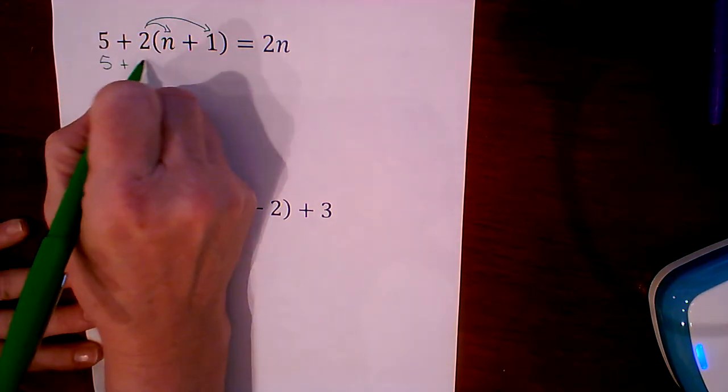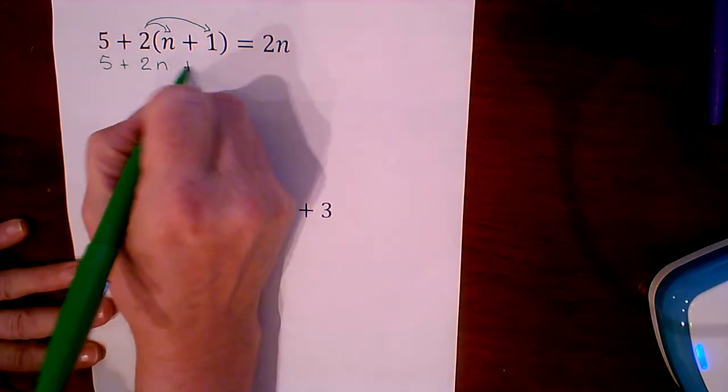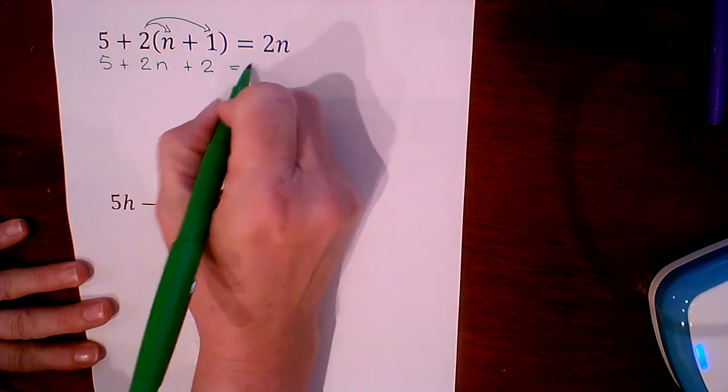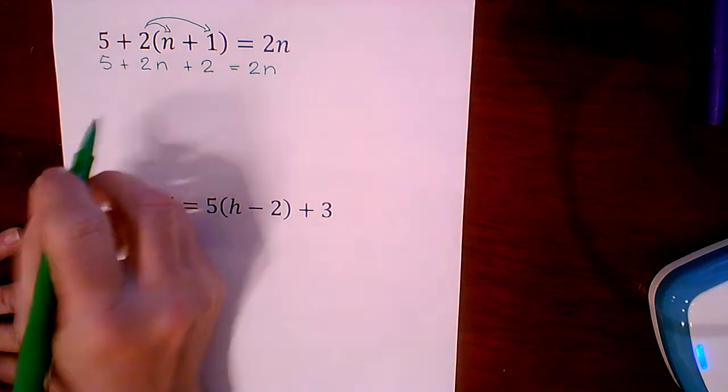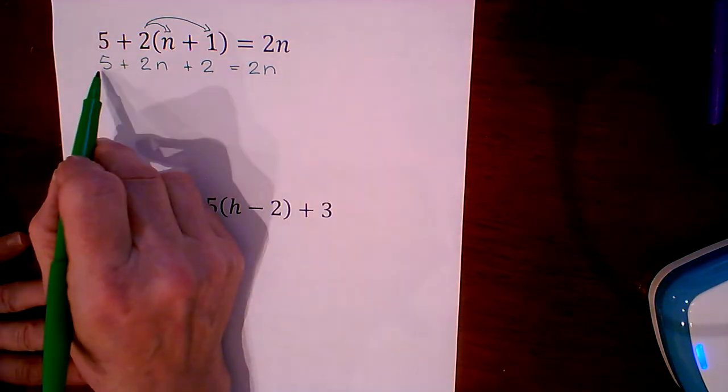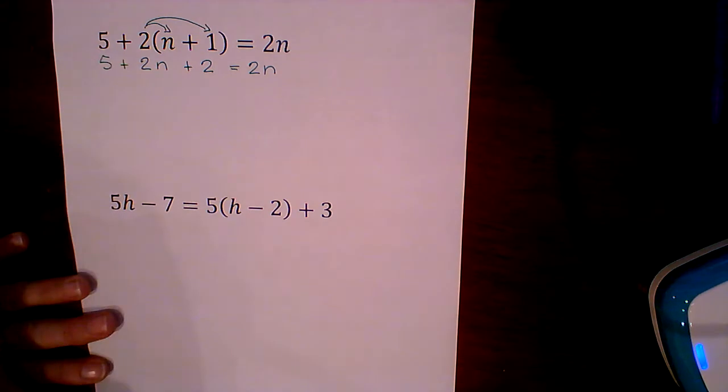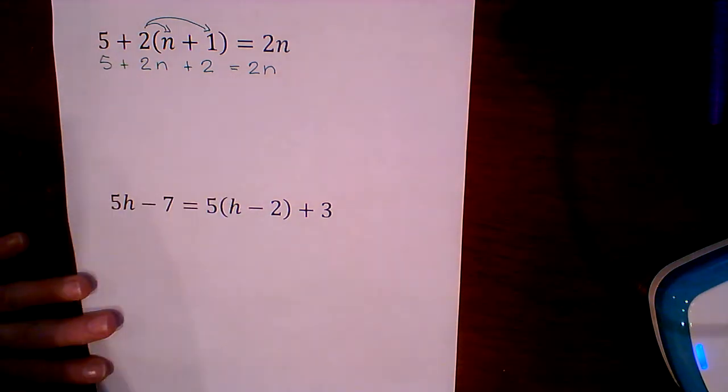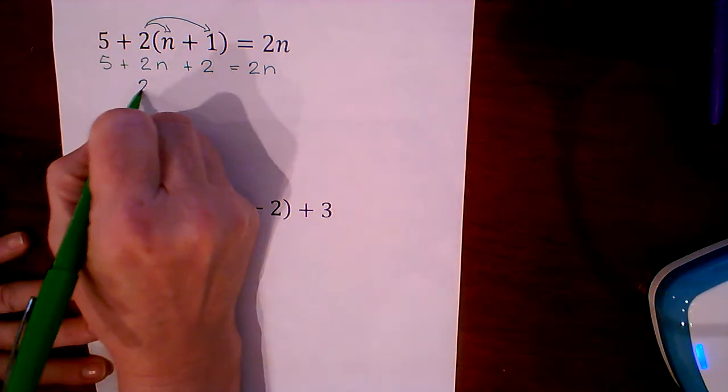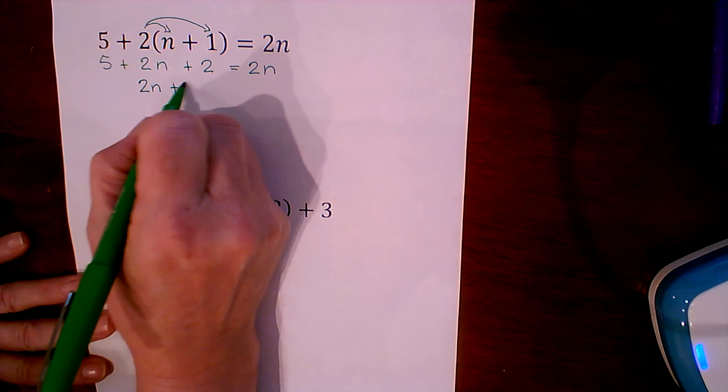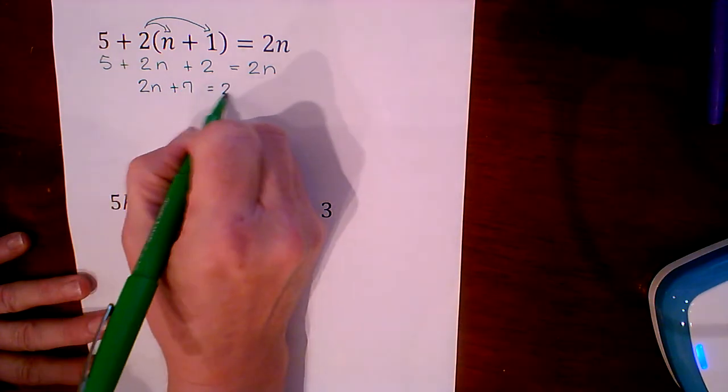5 plus 2n plus 2 equals 2n. We have not completed simplifying on the left-hand side. We have these two constant terms that we can put together, so we end up with 2n plus 7 equals 2n.